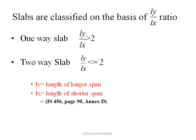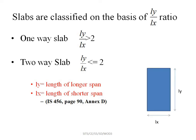Slabs are classified as one-way slab or two-way slab based on the LY by LX ratio. LY is the longer span and LX is the shorter span. According to IS code, if LY by LX is greater than 2, it is a one-way slab.